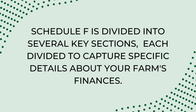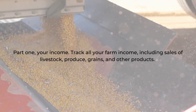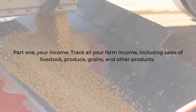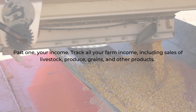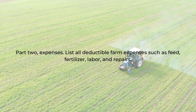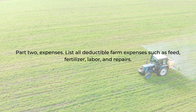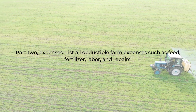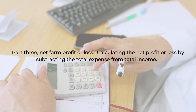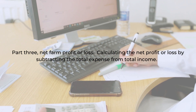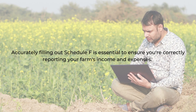Schedule F is divided into several key sections, each designed to capture specific details about your farm's finances. Part one covers your income — tracking all farm income including sales of livestock, produce, grains, and other products. Part two covers expenses — listing all deductible farm expenses such as feed, fertilizer, labor, and repairs. Part three calculates the net farm profit or loss by subtracting total expenses from total income.